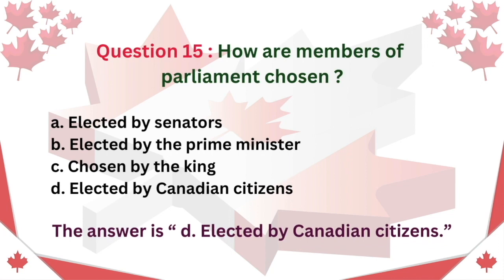Question 15: How are Members of Parliament chosen? A. Elected by Senators. B. Elected by the Prime Minister. C. Chosen by the King. D. Elected by Canadian citizens. The answer is D. Elected by Canadian citizens.